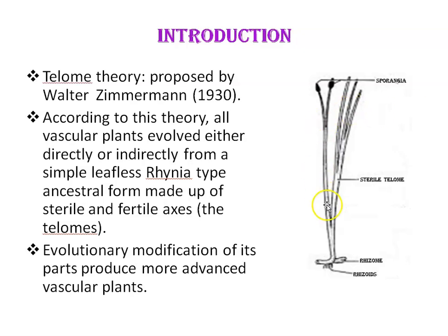Rhynia is a fossil rhodophyte having a sterile telome and a fertile telome. Sterile telome means a telome without sporangia, and fertile telome means a telome having sporangia at the tip. Evolutionary modification of its parts produced more advanced vascular plants with roots, stem, protected sporangia, and a more complex vascular system.